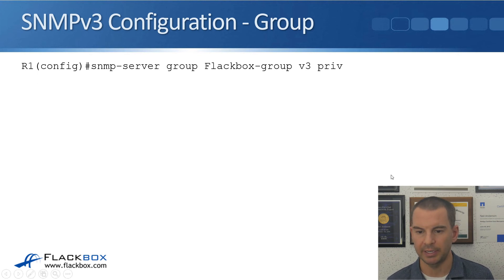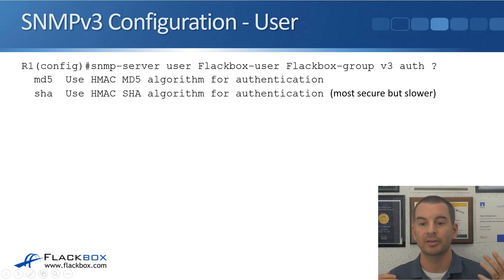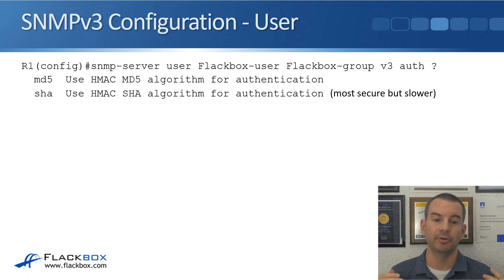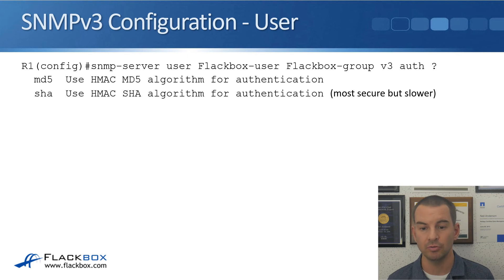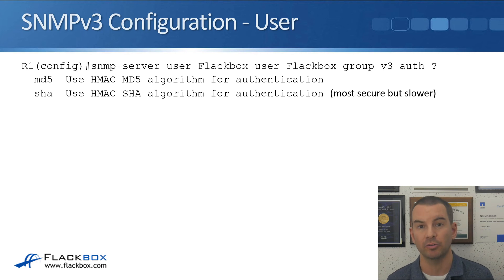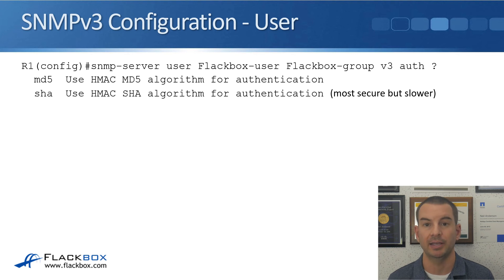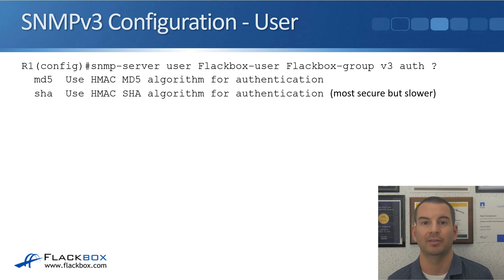Now I'm going to configure my user. The command starts with 'snmp-server user', and for my example user I've called it 'flatbox-user'. Next I specify the group that this user is in - I'm putting it in the 'flatbox-group' I just configured. I say 'v3' for SNMP version 3, and then 'auth' is where I specify the authentication algorithm. I can either use MD5 or SHA authentication - SHA is more secure but a little bit slower.